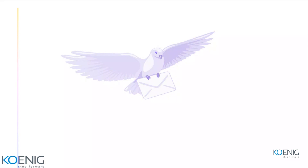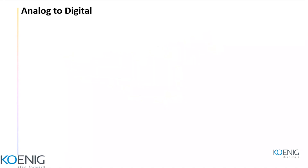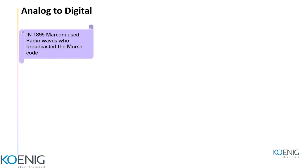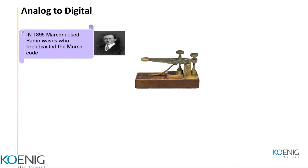Security is very important in any type of communication — this mode is called encryption. The first wireless communication was in 1895: Marconi used radio waves to broadcast Morse code using a telegraph machine — that is, dots and dashes. Currently we represent dots as ones and zeros, known as binary digits.